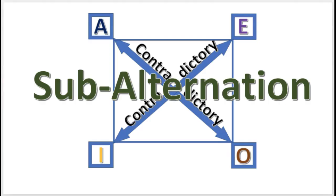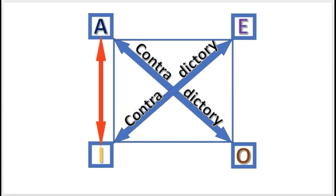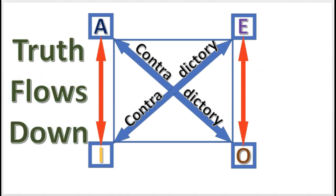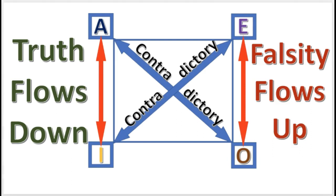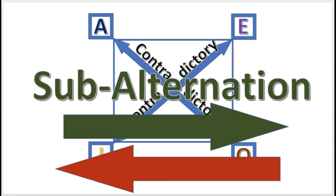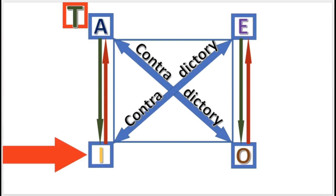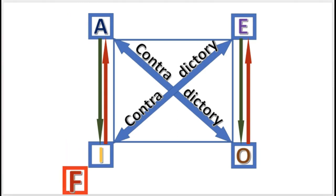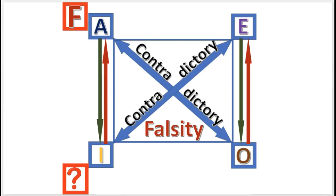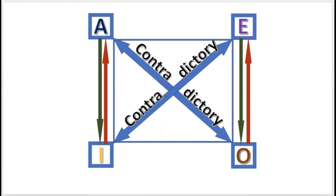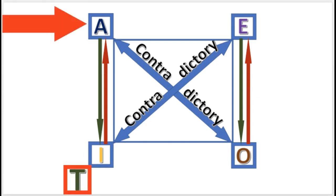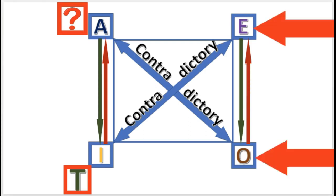Subalternation is next. The relation exists on the sides of the square, between the A and the I, and between the E and the O. Subalternation says that truth flows downwards and falsity flows upwards. It can be represented with arrows: the true arrows point down and the false arrows point up. So if the A proposition is true, then the I is true. And if the I is false, then the A is false. But if the A is false, then the I is undetermined, because falsity does not flow downward. Similarly, if the I is true, then the A is undetermined. The same results hold for the E and the O propositions.